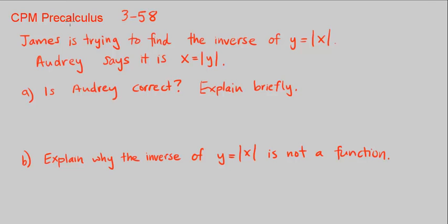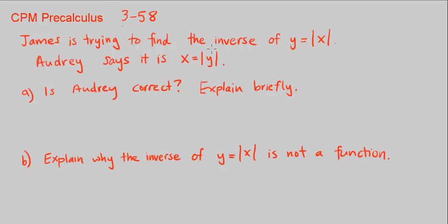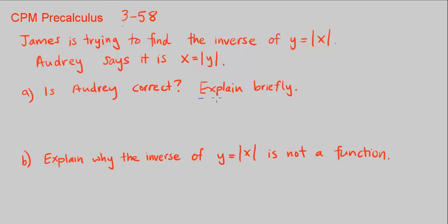This is CPM Precalculus Chapter 3, Number 58. James is trying to find the inverse of the function y is equal to the absolute value of x. Audrey says it is x is equal to the absolute value of y. Is Audrey correct? Explain.